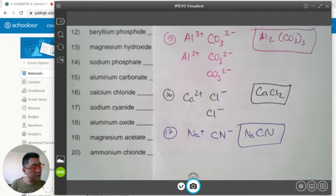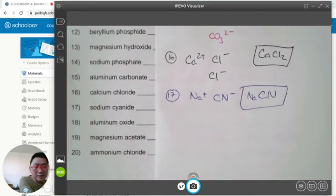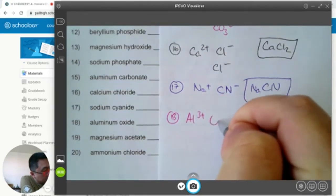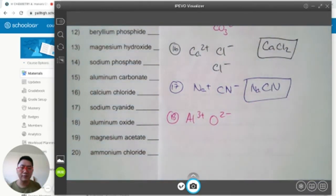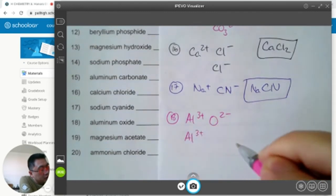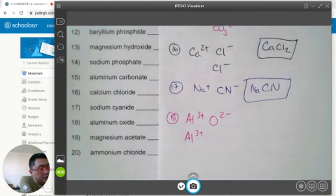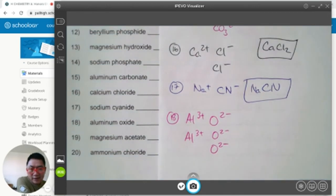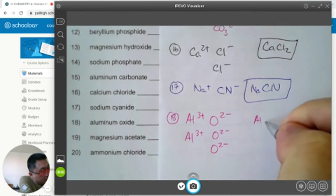Number 18, aluminum oxide. Aluminum's charge is positive 3. Oxide's charge is negative 2. What's the correct formula? I need 2 aluminums. Why? Because the least common multiple between 3 and 2 is 6. Two aluminums, 3 times 2 is positive 6. And I need 3 oxides, each one being negative 2, that's negative 6. The correct formula of aluminum oxide is Al2O3.